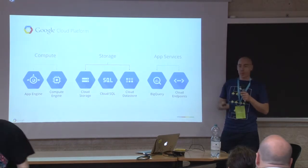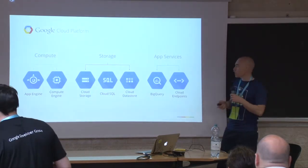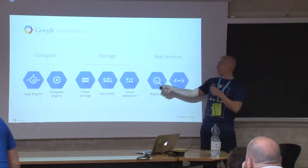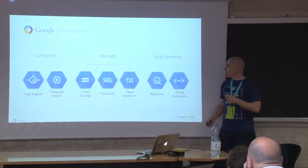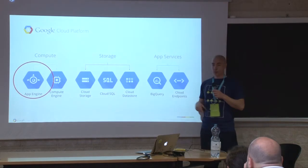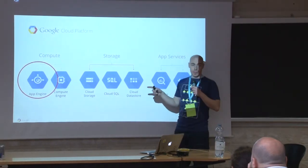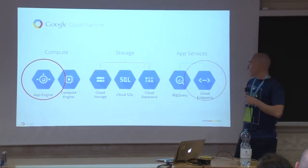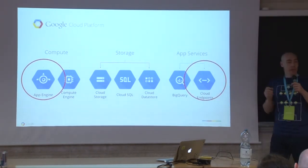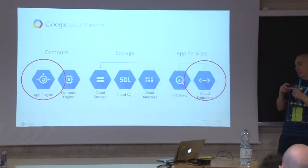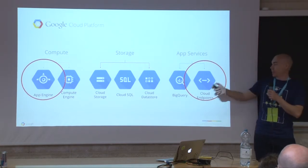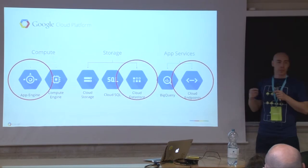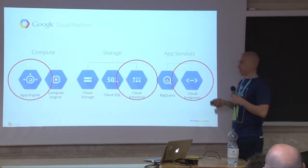Then there is storage — file, SQL, and NoSQL storage — and then services built on top of everything else. For our application we are going to use App Engine for the backend logic, Cloud Endpoints to create APIs between the backend and our application, and Cloud Datastore to store data.